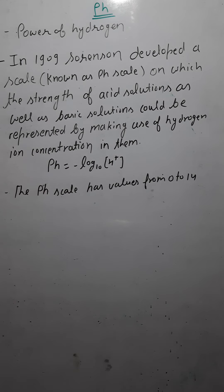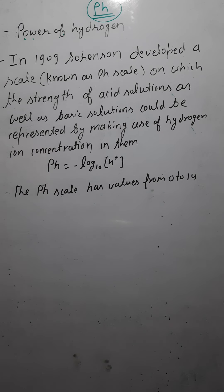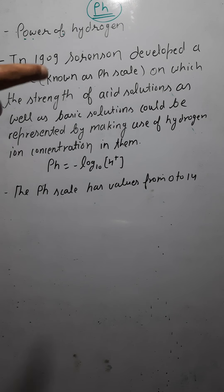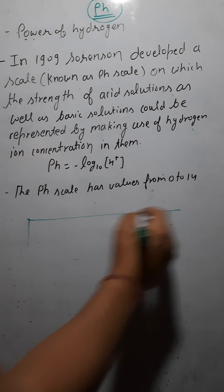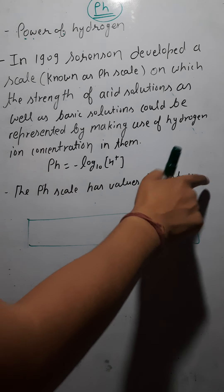pH stands for 'power of hydrogen.' In 1909, Sorensen developed a scale known as the pH scale, on which the strength of an acid solution as well as a basic solution could be represented by using the hydrogen ion concentration in them. This scale ranges from 0 to 14.